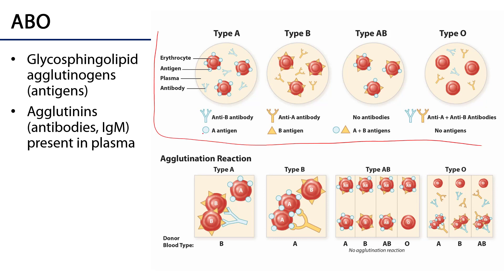Type A has A antigens and anti-B antibodies. Type B blood has B antigens and anti-A antibodies. Type AB has both A and B antigens with no antibodies against A or B. Type O has no antigens but has both anti-A and anti-B antibodies. Let's take a look at what can happen when various blood types donate to one another.